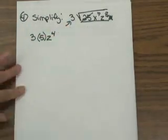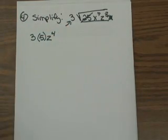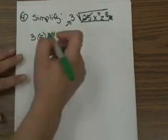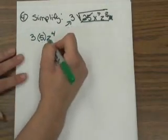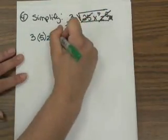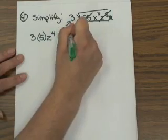Now again, that's me taking the square root of z to the 8th. That's how I get z to the 4th, which now is on the outside. So the only thing left inside the radical is x to the 7th.